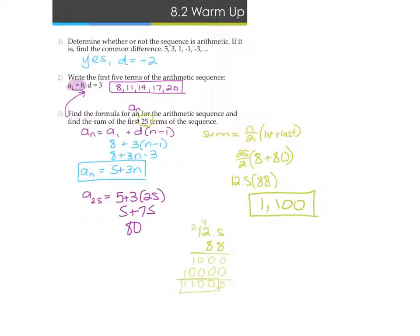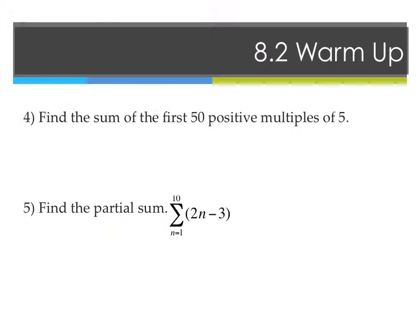Question so far? Okay, 4 says find the sum of the first 50 positive multiples of 5. So I know n, right? Well, first of all, let's write out the equation again. n over 2 times first plus last.